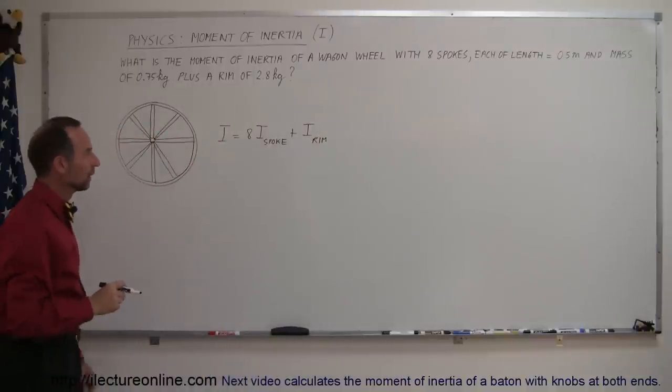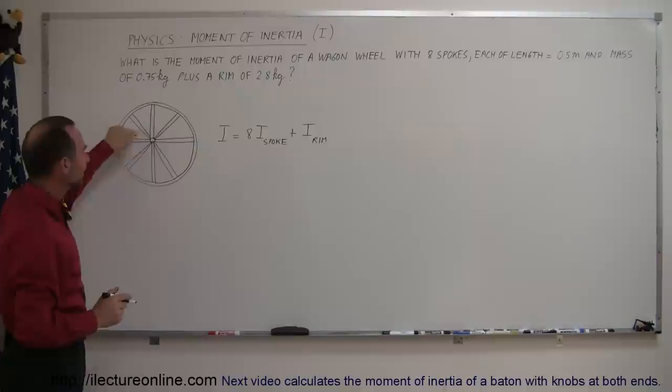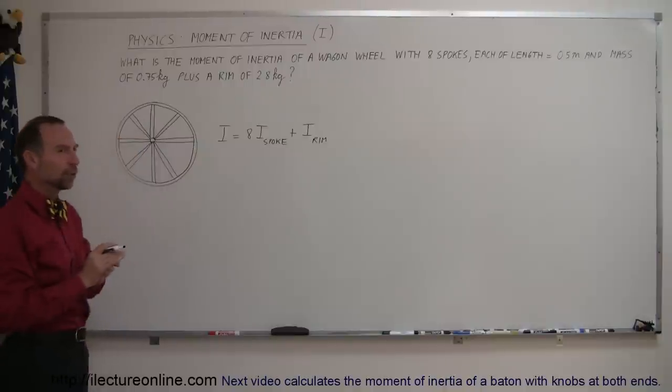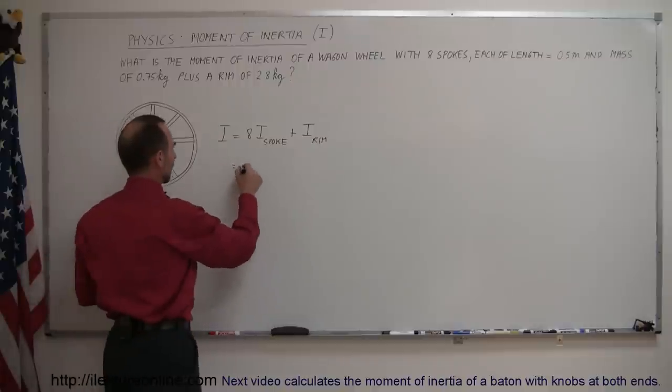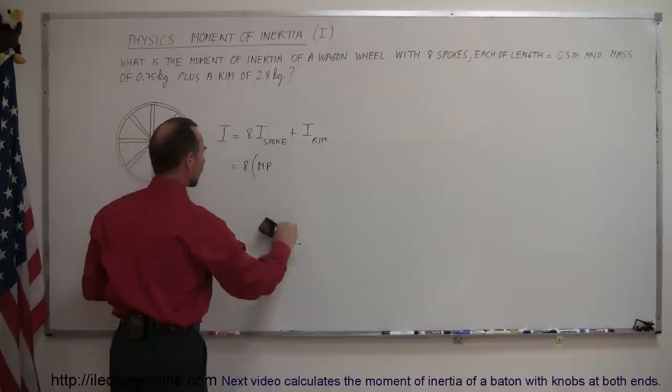Now each spoke is basically a bar object, a thin bar that rotates about its end and the moment of inertia of a bar that rotates about its end is eight times the mass of each bar times the radius or the length of each bar.